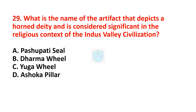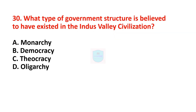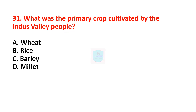Next question: what is the name of the artifact that depicts a horned deity and is considered significant in the religious context of the Indus Valley Civilization? Correct answer is the Pashupati seal. Next question: what type of government structure is believed to have existed? Correct answer is theocracy. Next question: what was the primary crop cultivated by the Indus Valley people? The primary crop was wheat.